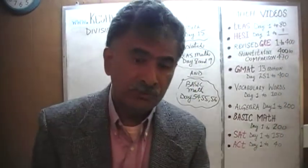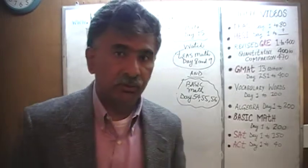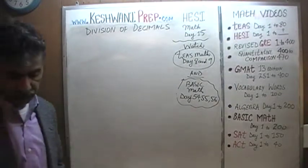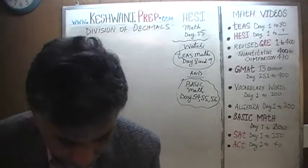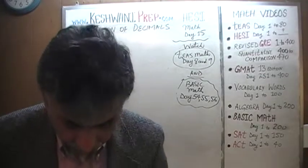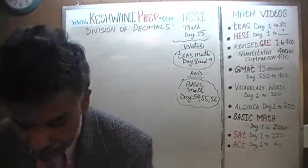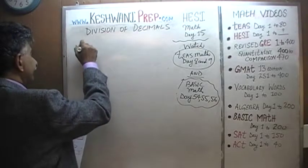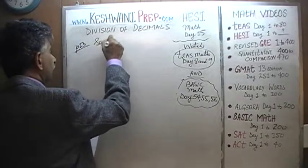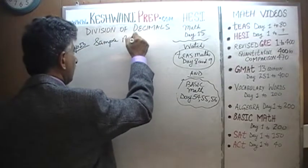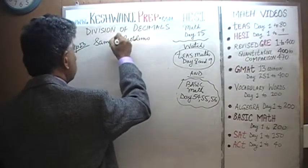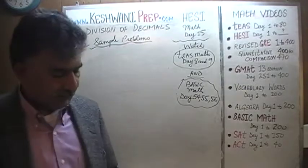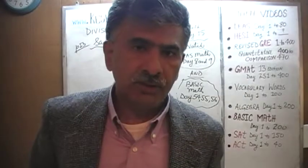Right now we are in the process of solving problems dealing with the notion of division of decimals. We are going to begin solving the sample problems that you see on page number 13. Yesterday we did the three examples they give you, and now we are going to do the ten sample problems.